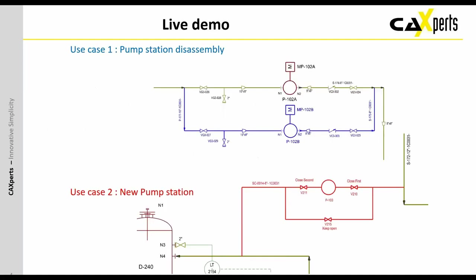Before I jump into the live demonstration, I want to give a short overview of what I'm going to show. I'm going to use a part of the PID to disassemble a pump — in this case it will be P1 or P2B. The objects which are around this pump, including bypass valves and so on, they will be marked. A sketch will be created which saves this as a disassembly component. And I will also show what can be done on the 3D side.